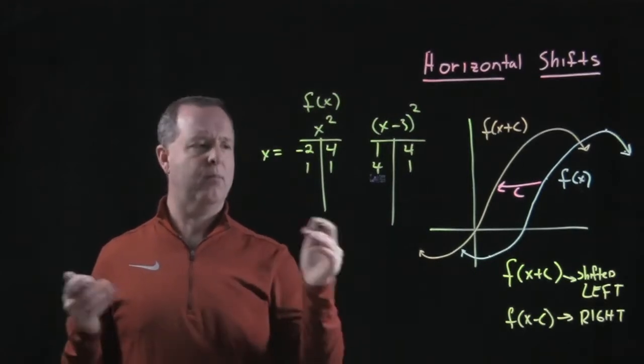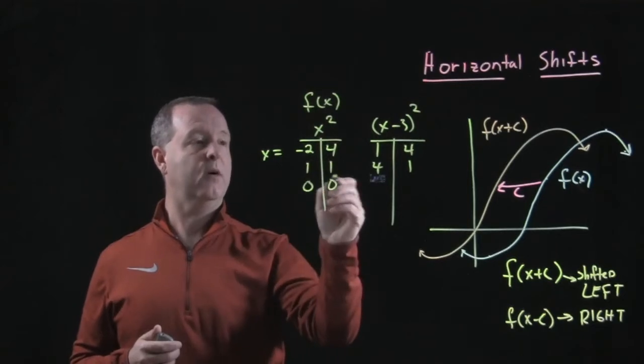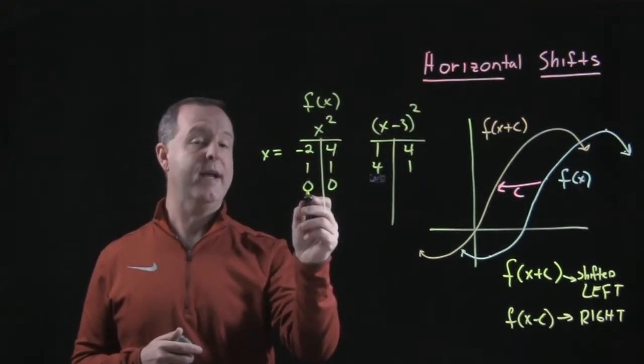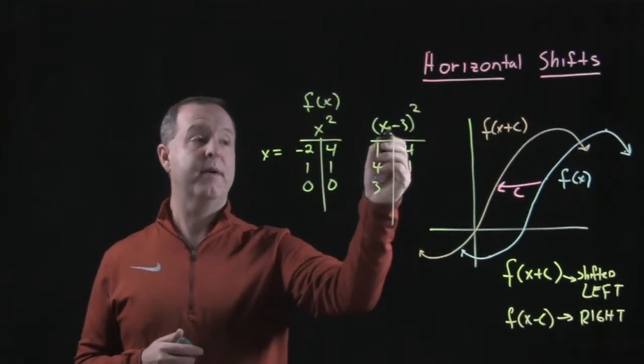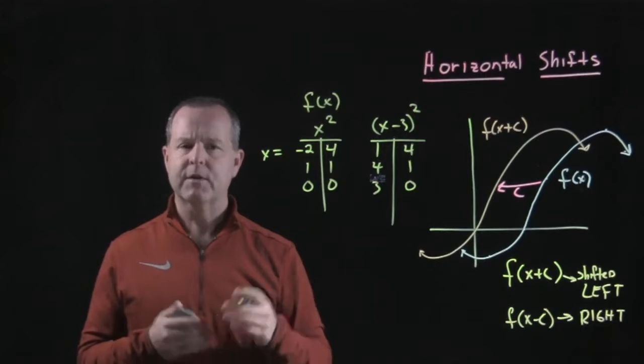Let's just choose one more. Let's choose 0. 0 squared becomes 0. Three points to the right of 0, which is 3. 3 minus 3 is 0, 0 squared becomes 0.